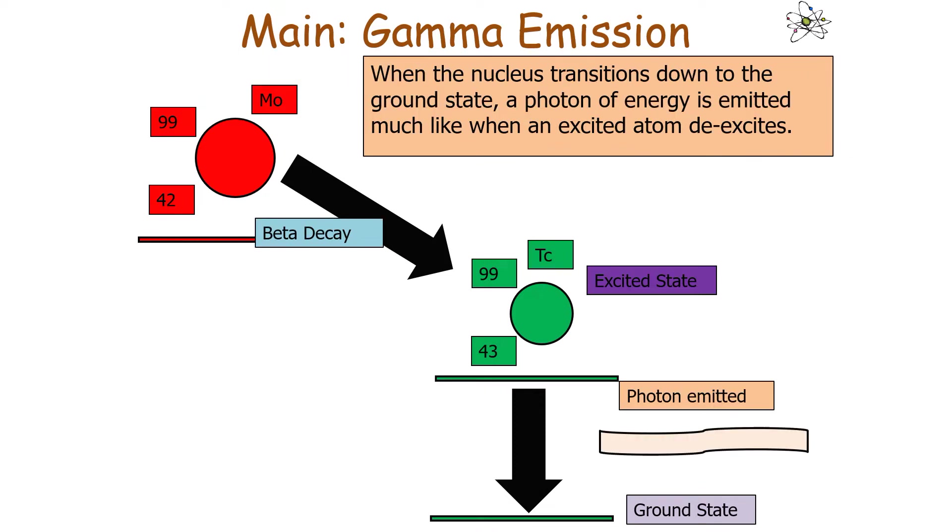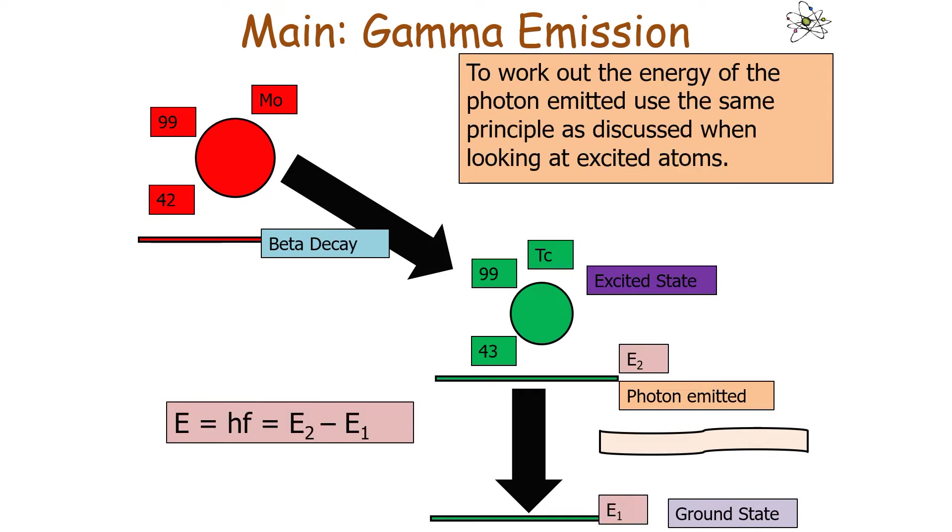When the nucleus transitions down to the ground state, a photon of energy is emitted, much like when an excited atom de-excites. To work out the energy of the photon emitted from the nucleus, we can use the same principle as when we looked at excited atoms.